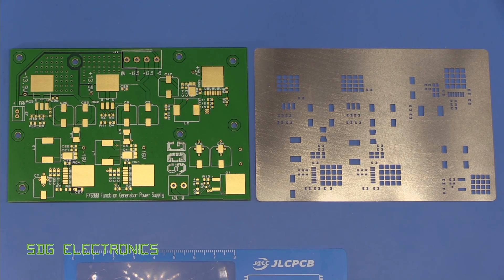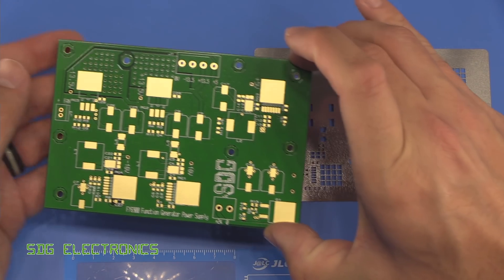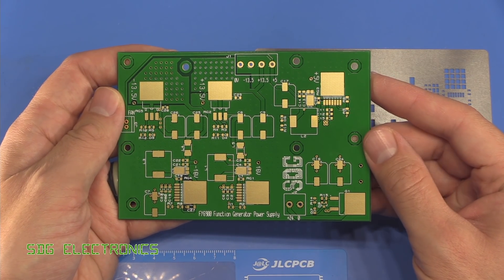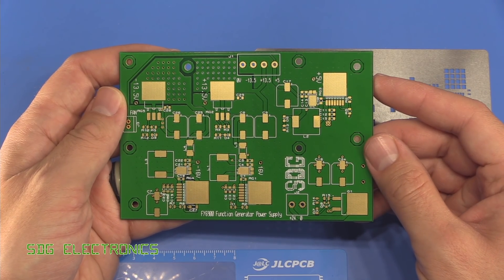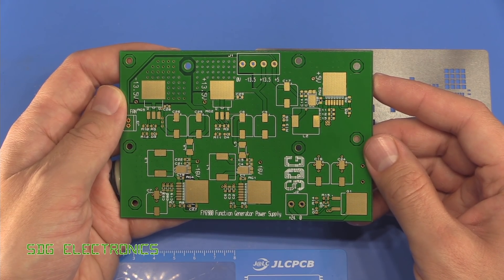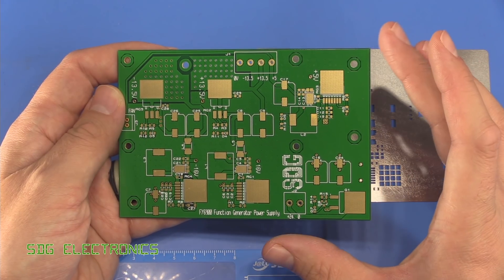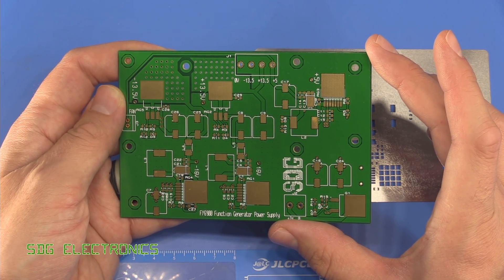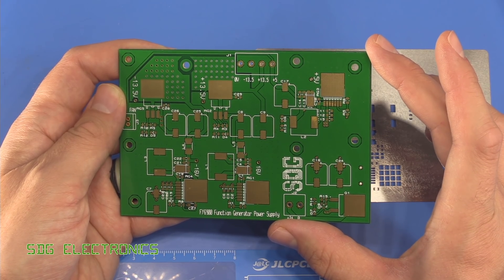Hi, today we're continuing the FieldTech FY6900 power supply project. We've got the PCBs through from JLCPCB. They arrived only six days after placing the order, which is super fast. DHL did their job getting it here from China in only two and a bit days, which is incredible.